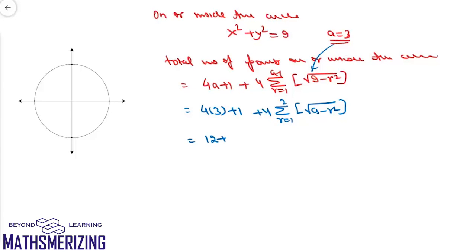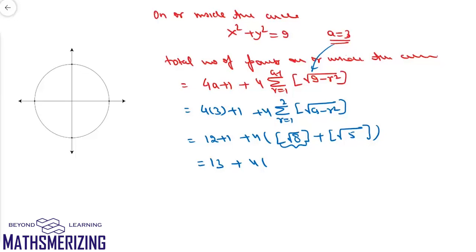For r = 1 we get ⌊√8⌋ = ⌊2√2⌋ = 2, and for r = 2 we get ⌊√5⌋ = 2. So the total is 13 + 4·(2 + 2) = 13 + 16 = 29. There are 29 integral points lying on or inside the circle x² + y² = 9.